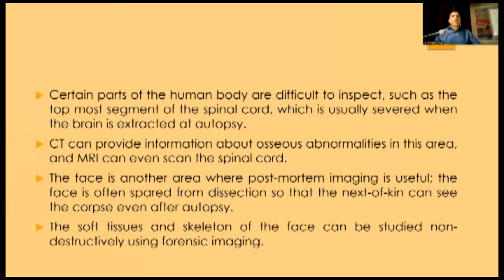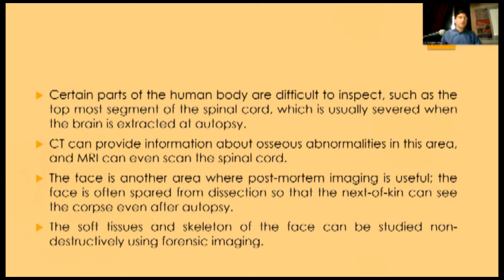As per the principle that later fracture lines do not overlap pre-existing ones, CT scan can readily examine fracture patterns and establish which strike or gunfire occurred first. Certain body parts are difficult to inspect, such as the topmost segment of the spinal cord, which is usually severed when the brain is extracted at autopsy. CT can provide information about osseous abnormalities in this area, and MRI can scan the spinal cord itself.